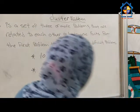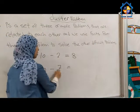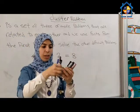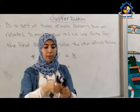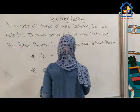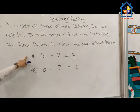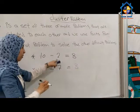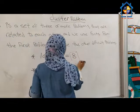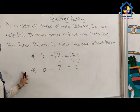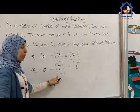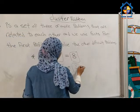And if I have 10 and I want to subtract 7, take away 7 from 10: 1, 2, 3, 4, 5, 6, 7. The remainder is 3. In the first problem, when I subtracted a small number like 2, the remainder was a big number like 8. And in the second problem, when I subtracted a big number like 7, the remainder was a small number like 3.